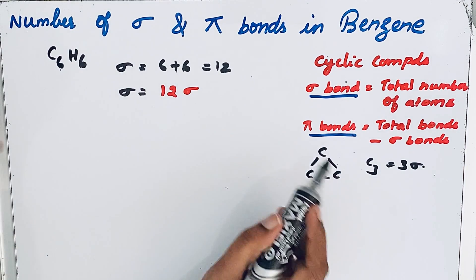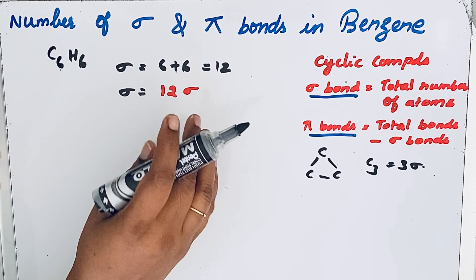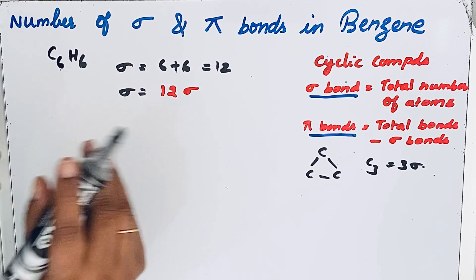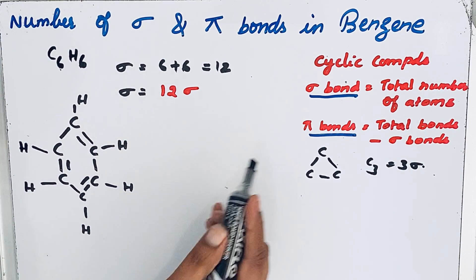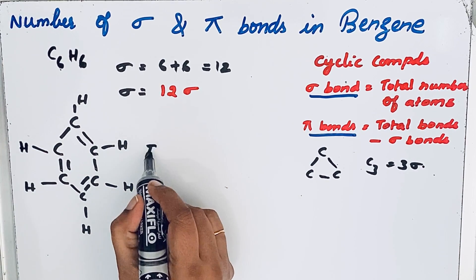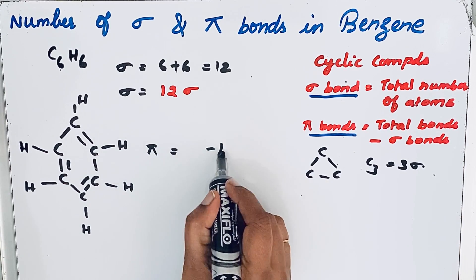To find the pi bonds, we should know the structure. We need to draw the structural formula. Let us draw the structure of benzene. This is the structural formula of benzene. For pi bonds, it equals total bonds minus sigma bonds. We already know the sigma bonds, so minus 12.